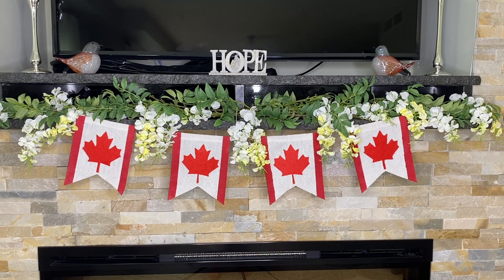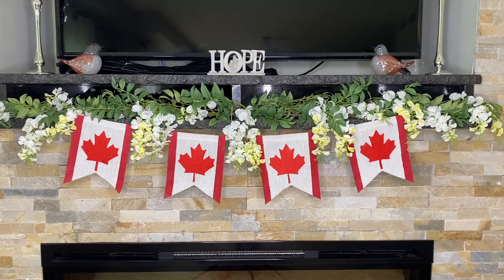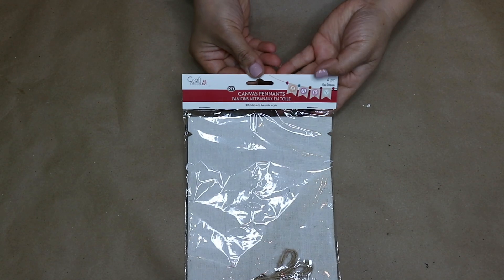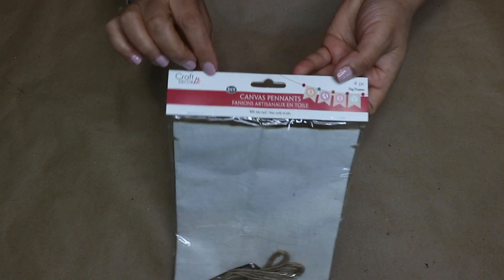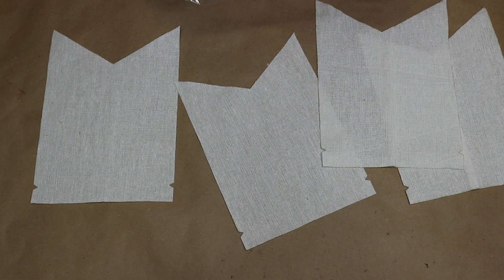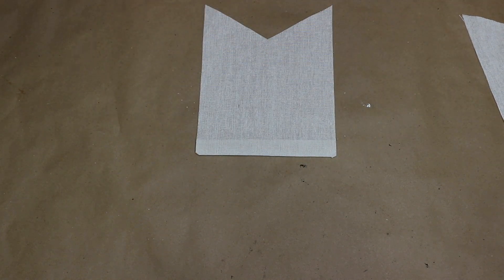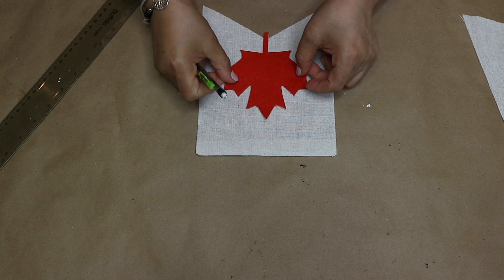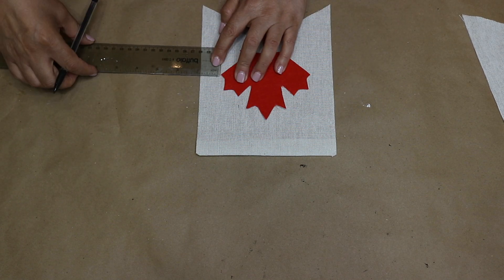Next project is super simple. I am using this canvas banner from Dollar Tree. It comes in a pack of four pieces. So at first I will measure about 2 centimeters on each side and draw lines. I will go ahead and do same thing on all the pieces.